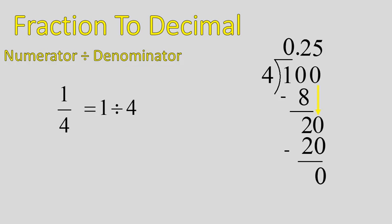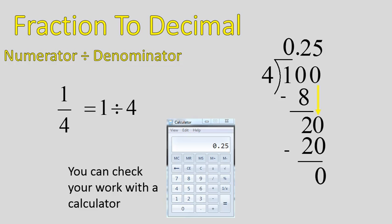Alright, so the fraction of one-fourth is equal to zero point two five. You may already have known that one-quarter is point two five, if you've ever had money, but you can also check using your calculator to make sure that this works out. It's the numerator divided by the denominator, so one divided by four. Pretty straightforward.